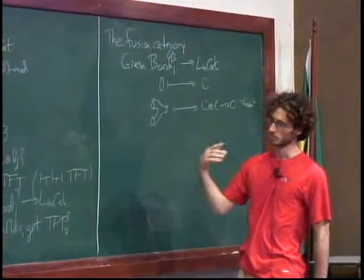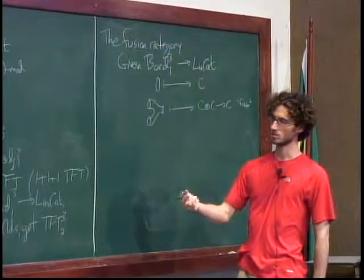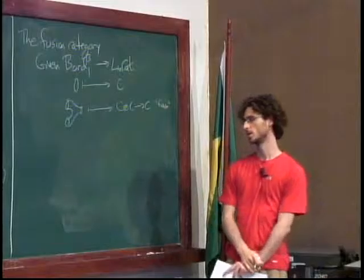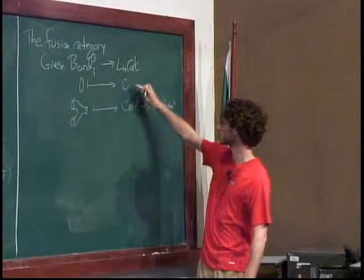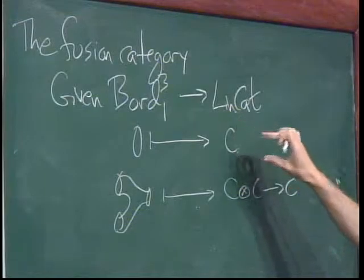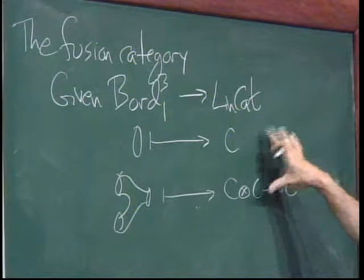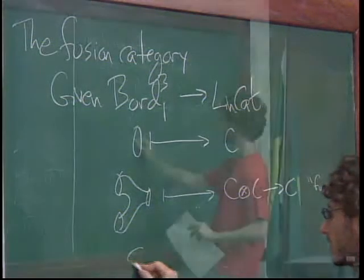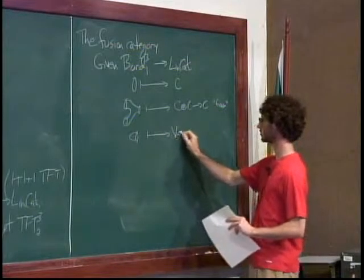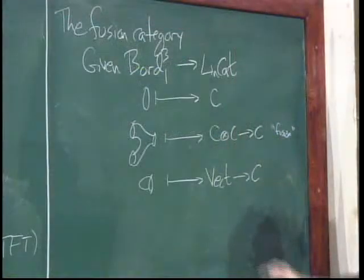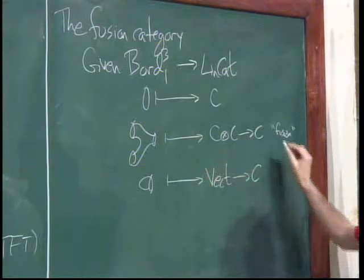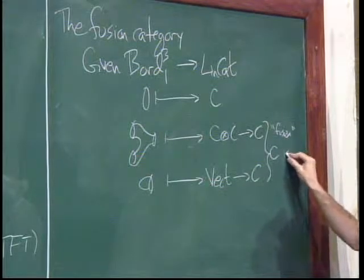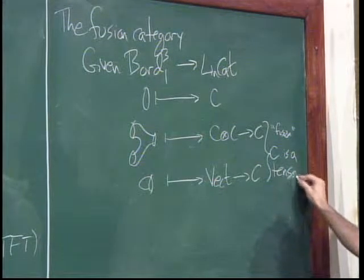This operation is called fusion, and so this category has a tensor structure — the tensor operation is called fusion. I'll use the words tensor and monoidal more or less interchangeably; tensor tends to connote that the underlying category is a linear category. So C is a linear category with a monoidal structure — a tensor category. I also want a unit: a functor from Vect into C.